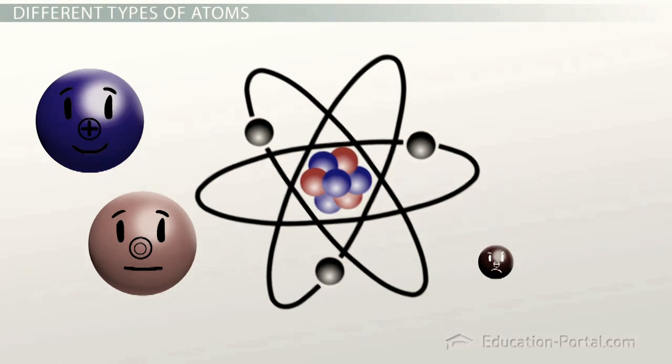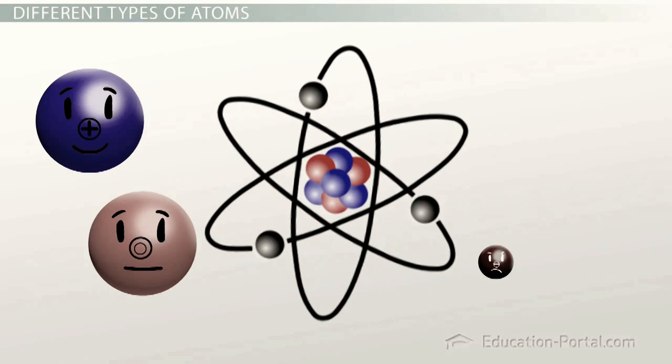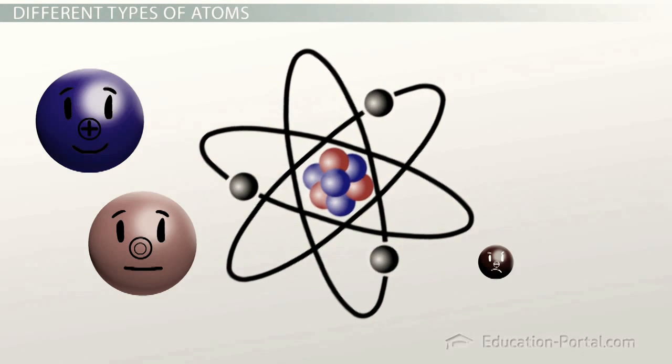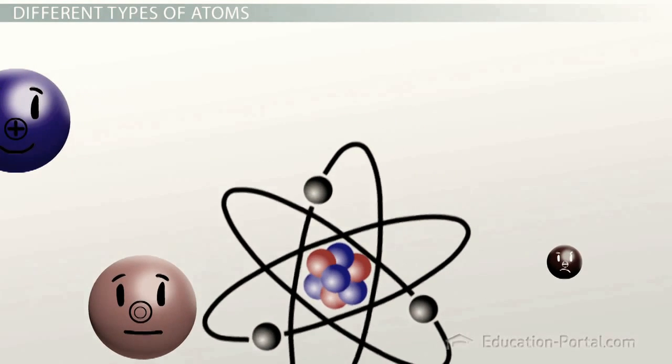The number of protons an atom has will determine which type of element it is, and all atoms of the same element will always have the same number of protons. Where things get interesting is in the number of neutrons in the nucleus.